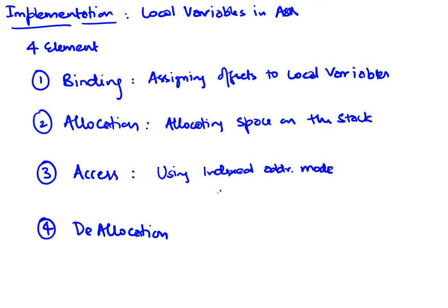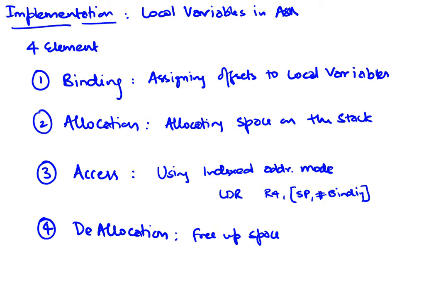Access is done using the indexed addressing mode. Typically we'll do something like LDR into some register, say R4, using the stack pointer and the binding associated with the local variable as an offset. The last thing: anything that has been allocated has to be de-allocated, so we free up the space that was allocated.